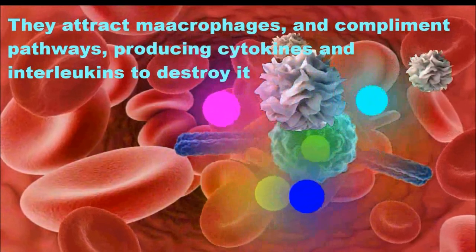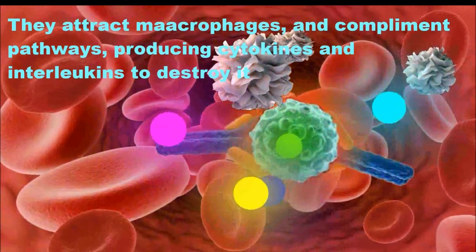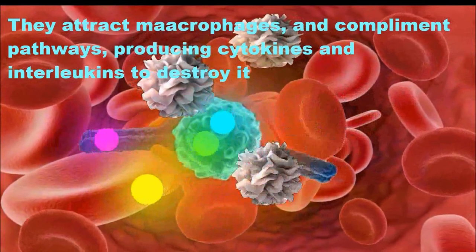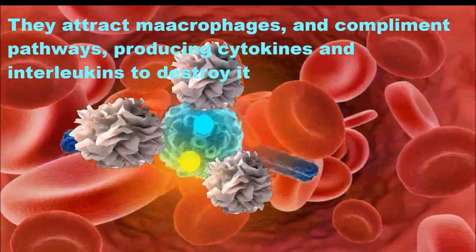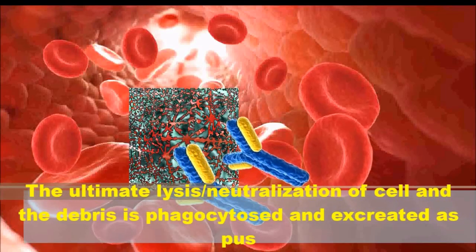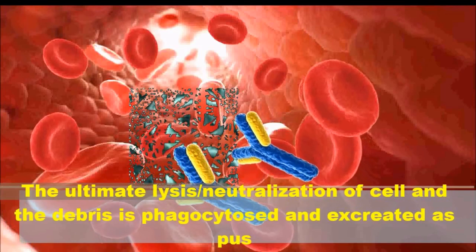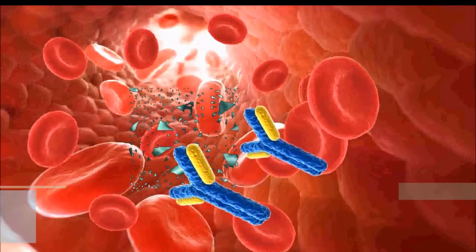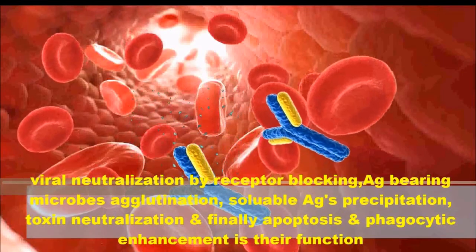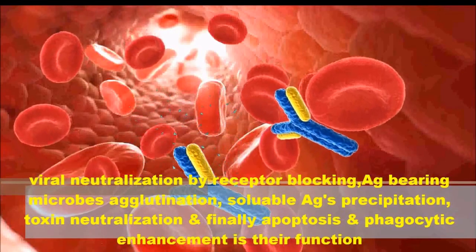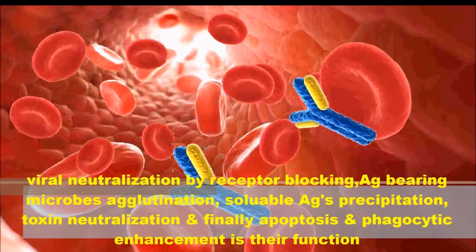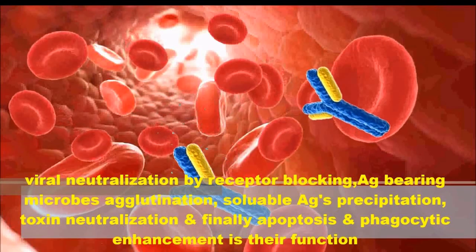They attract macrophages and activate complement pathways, producing cytokines and interleukins to destroy the infected cells. This ultimately leads to lysis or neutralization of the cell, and the debris is phagocytosed and excreted as pus. Antibody functions include viral neutralization by receptor blocking, agglutination of antigen-bearing microbes, soluble antigen precipitation, toxin neutralization, apoptosis induction, and phagocytic enhancement.